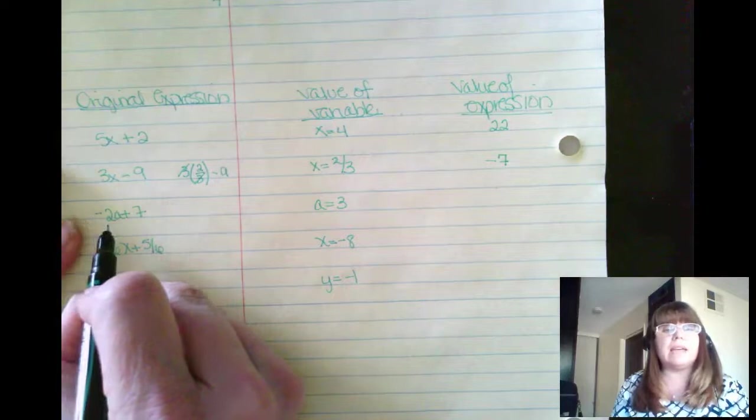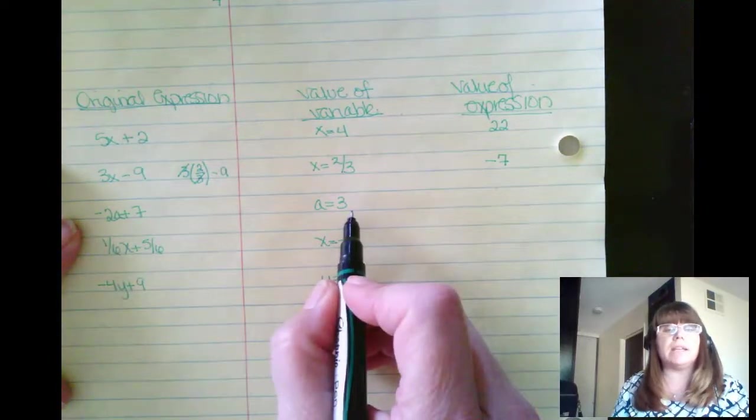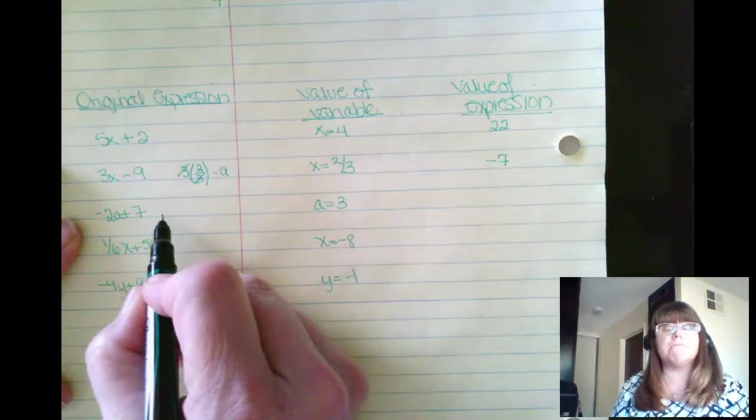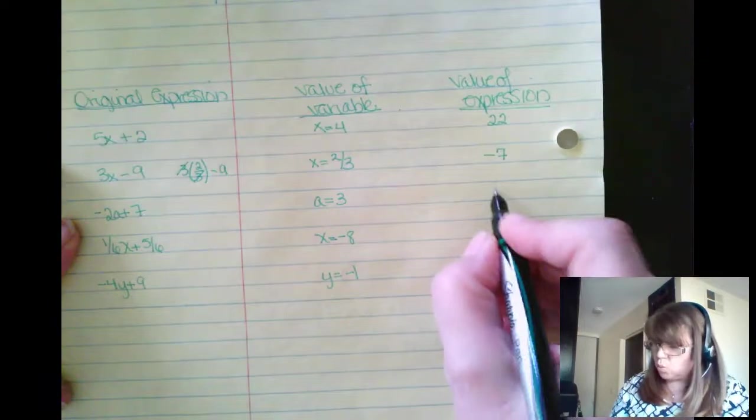Negative 2a plus 7. When a is 3, let's plug it in. Negative 2 times 3. Negative 6 plus 7 is 1.